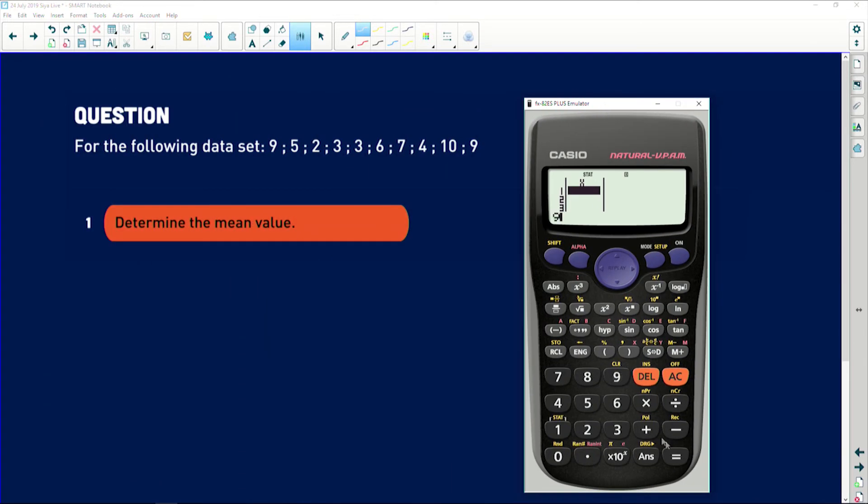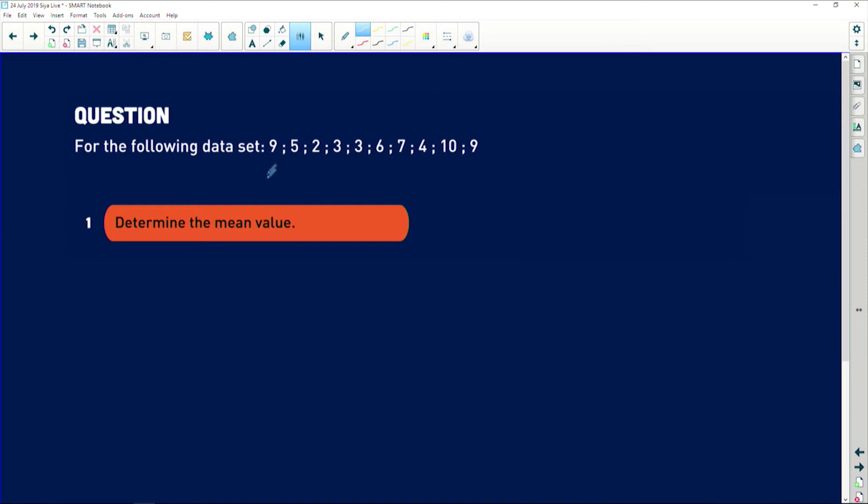I have my calculator here. First, we make sure that it is in stat mode, which we're taking the variance, and then I'm going to put it here. I've got 9, 5, 2, 8, 3, 3, 6, 7, 4, 10, and 9. So it says I have 10 terms there. Let's just make sure that we do have 10 terms. That's 1, 2, 3, 4, 5, 6, 7, 8, 9, 10. So we do have 10 terms.